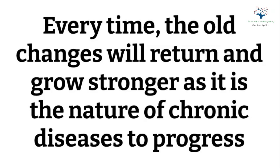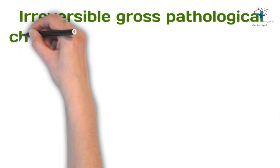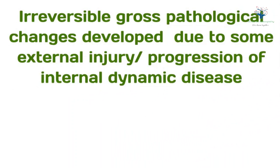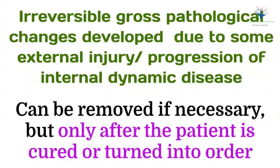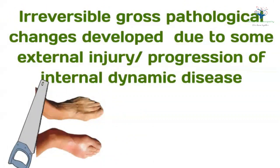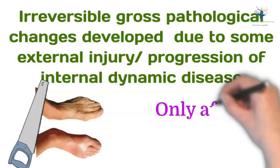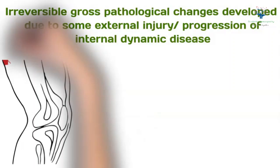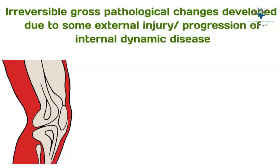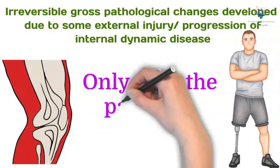Kent has discussed the irreversible gross pathological changes that developed either due to some external injury or progression of internal dynamic disease. According to him, such results of disease can be removed if necessary, but only after the patient is cured or turned into order. For example, amputation can be done of a clumsy and useless foot developed after a severe injury of the bones of the foot, but only after the patient is cured. A honeycomb knee — that is, multiple cavities produced in it due to disease progression — with cold limbs and flabby muscles can be replaced with an artificial leg, but only after the patient is cured.